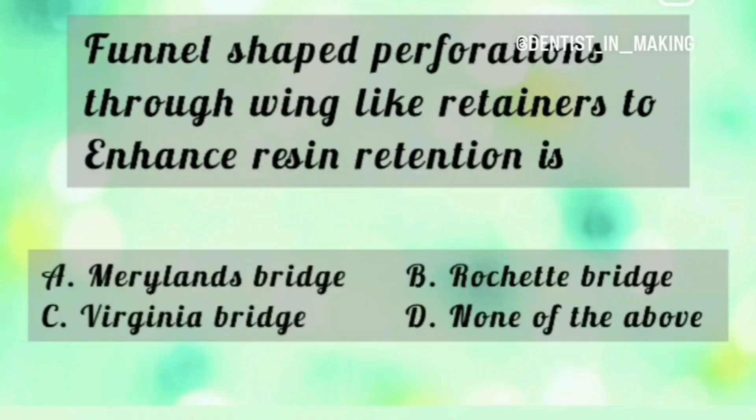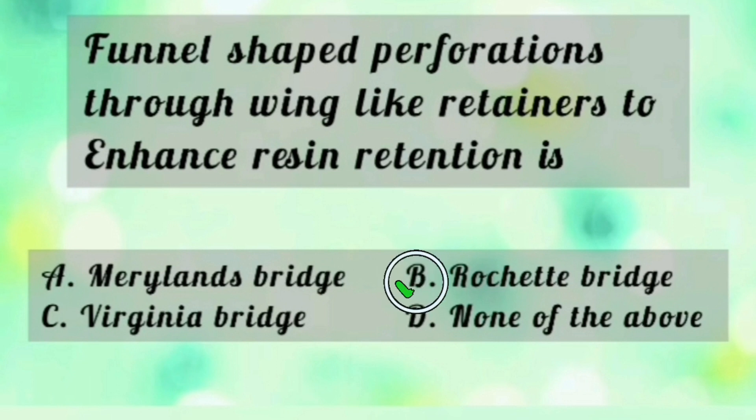If you know the answer, please leave it in the comment section or on the Instagram page — a special mention will be made for correct answers. Now let's go into yesterday's MCQ. Yesterday's question was: funnel-shaped perforations through wing-like retainers to enhance resin retention. The answer is Option B — Rochette's Bridge.